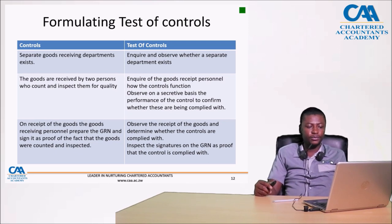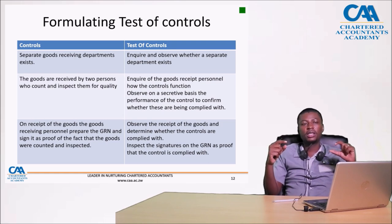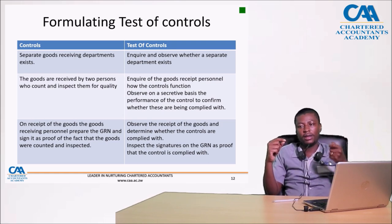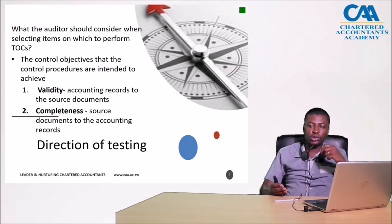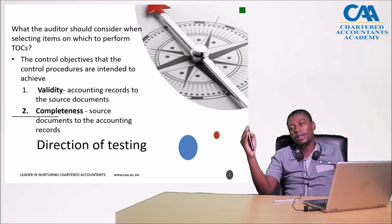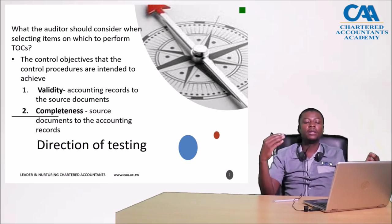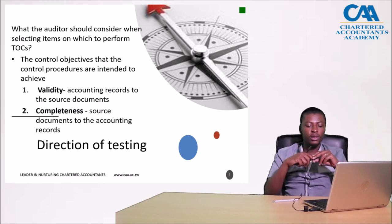Direction of testing talks about what you consider when selecting items to test — specifically the control objectives intended to be addressed. If the control addresses the validity objective, you select items from the accounting records and trace them back to source documents. If you have a completeness objective, you start from the source documents and confirm whether they are recorded in the accounting records. This is relevant depending on the type of control you are dealing with in the exam.